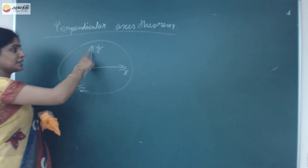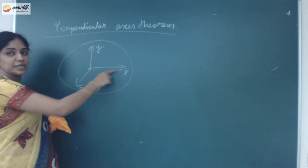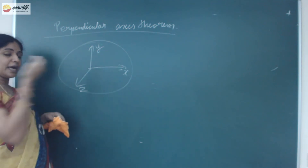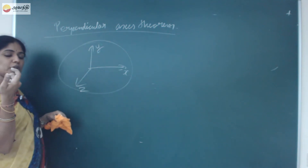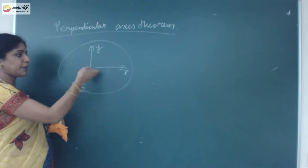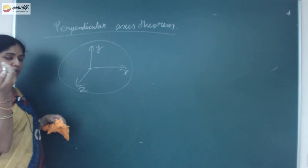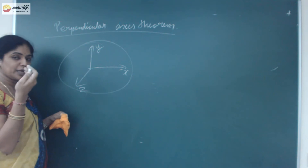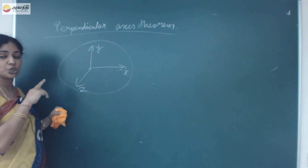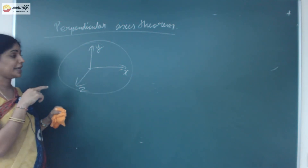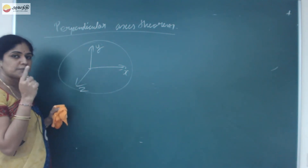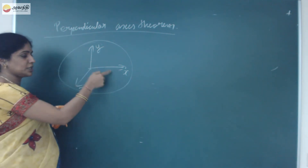X and Y is nothing but a lamina in the X-Y plane. Now I am taking an axis which is totally perpendicular to these two axes. X-Y is perpendicular in 3 dimensions. For example, if an object is rotating about the X and Y axes, then how do we find out the moment of inertia about an axis which is perpendicular to these two axes?